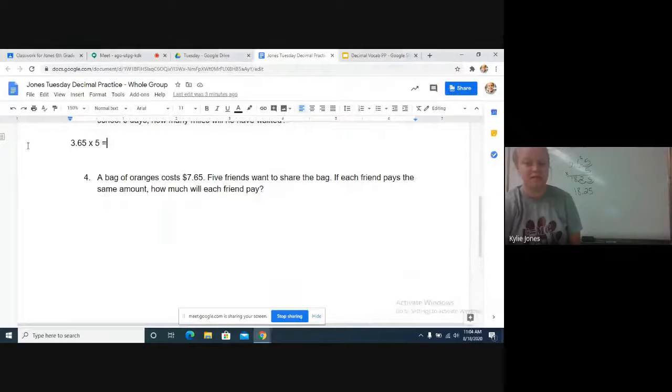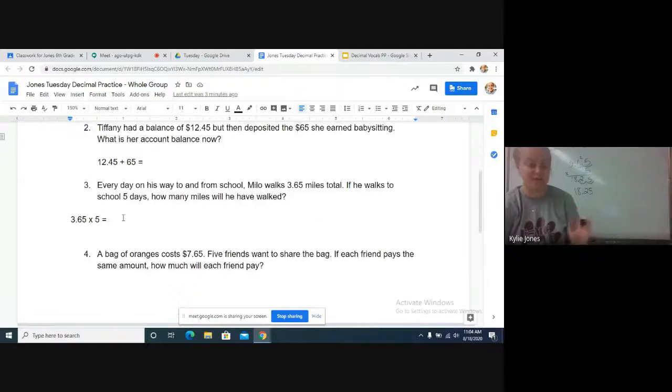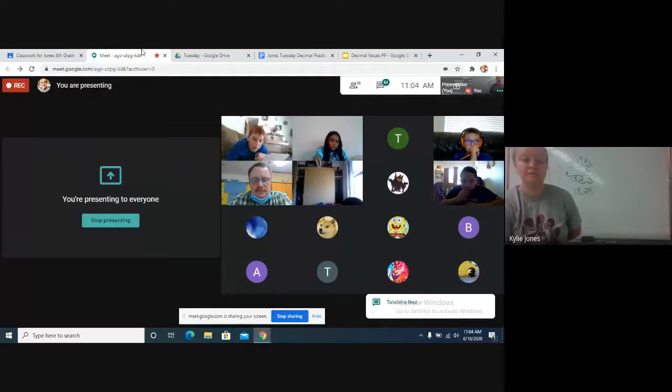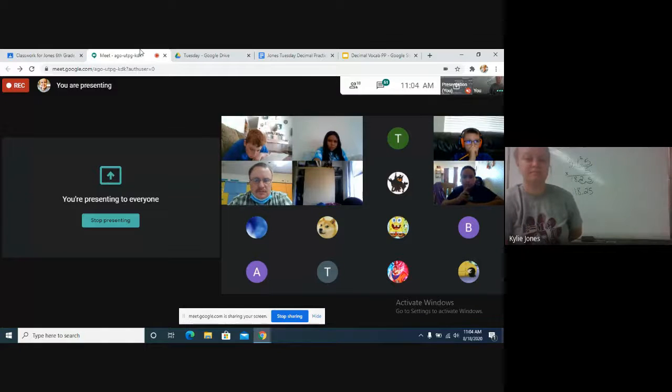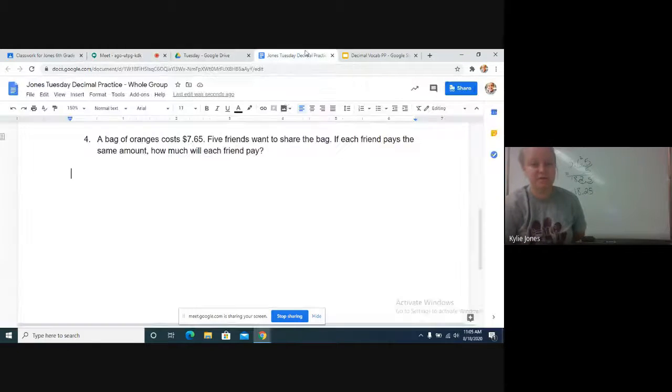Alright, so our last one. A bag of oranges costs $7.65. Five friends want to share the bag. If each friend pays the same amount, how much will each friend pay? So we already know it's going to be division because we're doing one of each problem. We've done addition, we've done subtraction, and we've done multiplication. So we know we're going to divide, but how do I know what to divide? What by what? What do you guys think? Any ideas? Juliana, go ahead. The lower amount. So the lower amount divided by the bigger one? Or which way? So if we look at the numbers, are we doing $7.65 divided by 5 or 5 divided by 7.65?